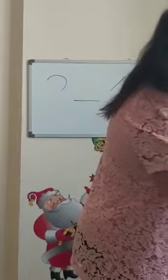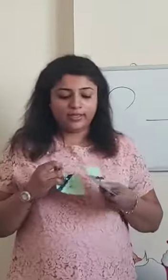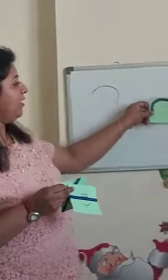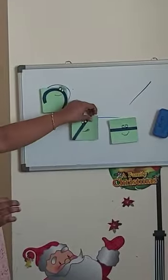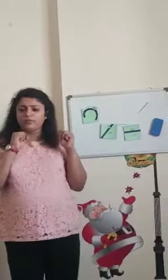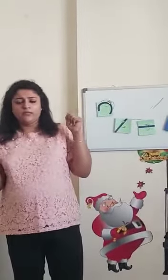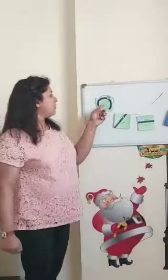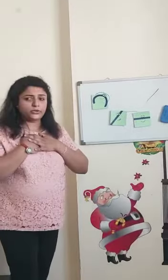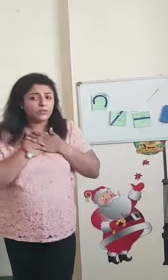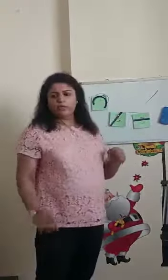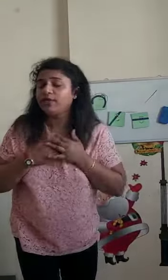One day there were three friends: a standing lion, a sleeping lion, and a curve. They were fighting each other. The curve said, I am the one who makes number 2. Then the standing lion said, you are not — I am the one who makes number 2. Then the sleeping lion said, you both are wrong, I am the one who makes number 2.